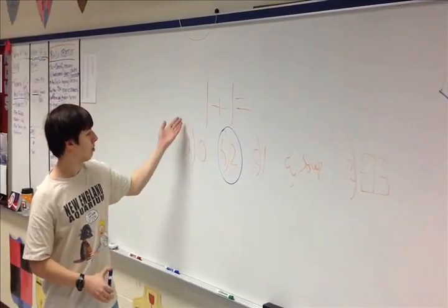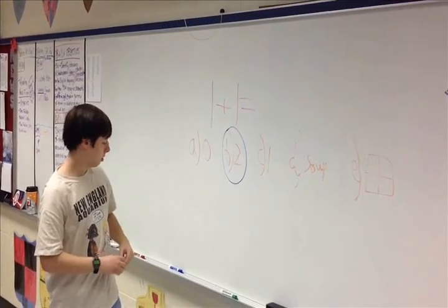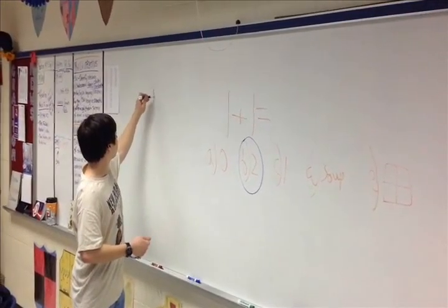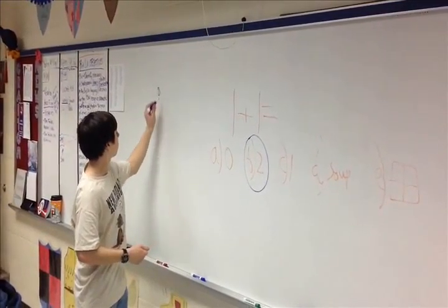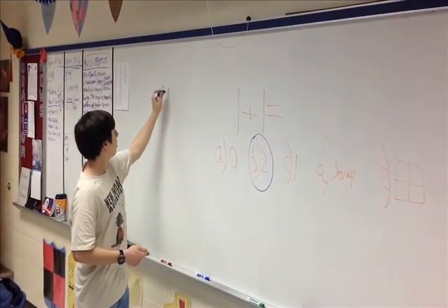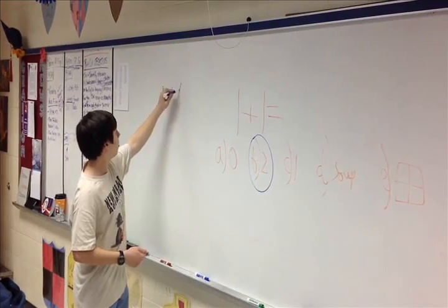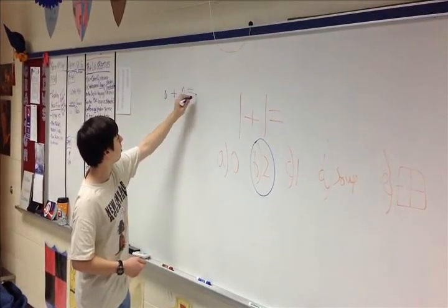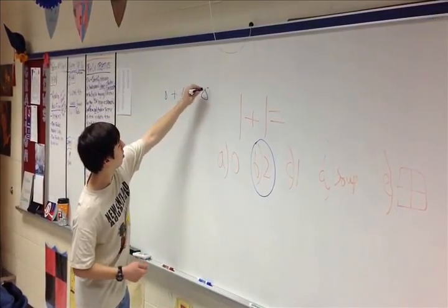One plus one, it equals two. Because if you have one of something, and then add another of something, you'll get two of that thing.